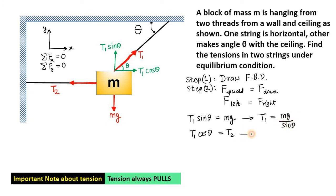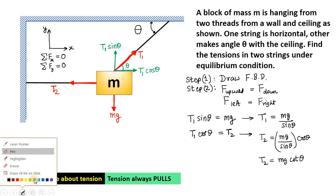That is one answer and from the second equation, T2 is equal to T1 into cos theta, that means mg divided by sin theta, which is T1 and multiplied by cos theta. Therefore, we can say T2 is equal to mg cot theta. So, these are the two answers of this question and the problem is solved.